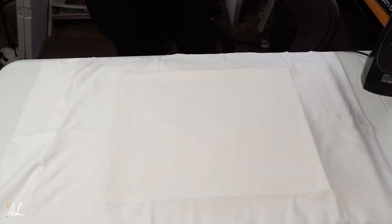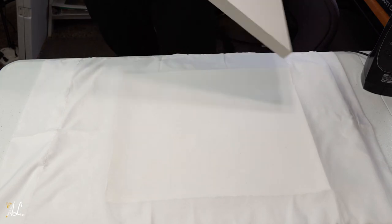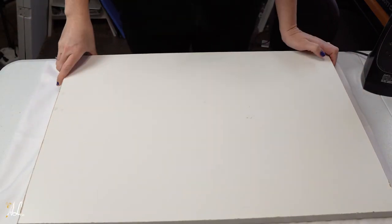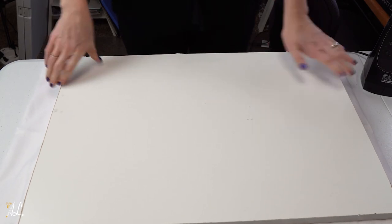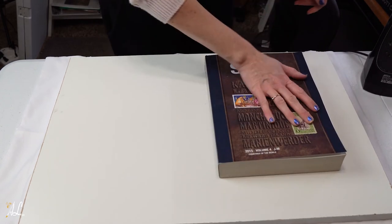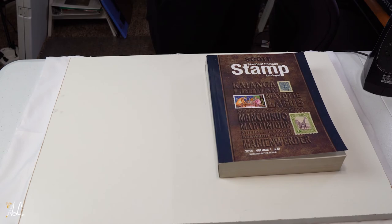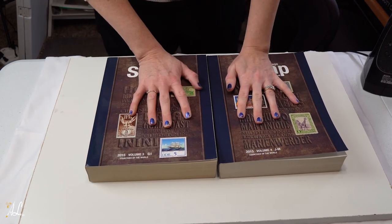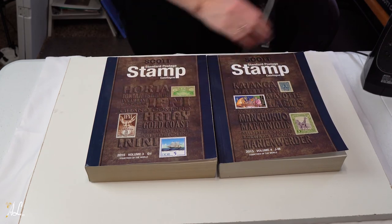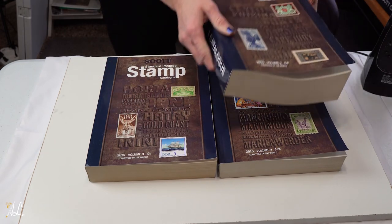And you're going to take another board and you're going to set it on top. This board is quite heavy so it's already adding some weight to my painting. And then I'm just going to stack my books on top. And the weight will make it stay flat so as it's drying it will continue to lay flat.